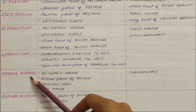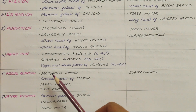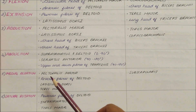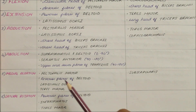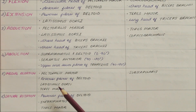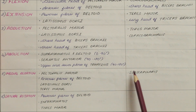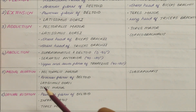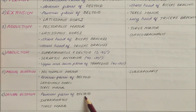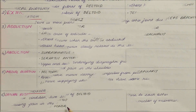In medial rotation, the main muscles are pectoralis major, anterior fibers of deltoid, latissimus dorsi, and teres major; the accessory muscle is subscapularis. In lateral rotation, the main muscles are posterior fibers of deltoid, infraspinatus, and teres minor.